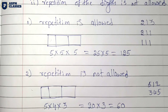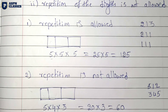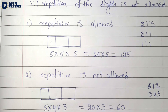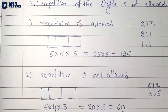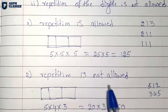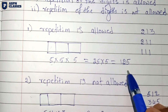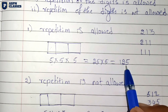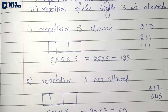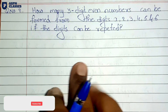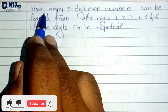So the required number of arrangements for the no-repetition case is 60 digits. That completes example one.